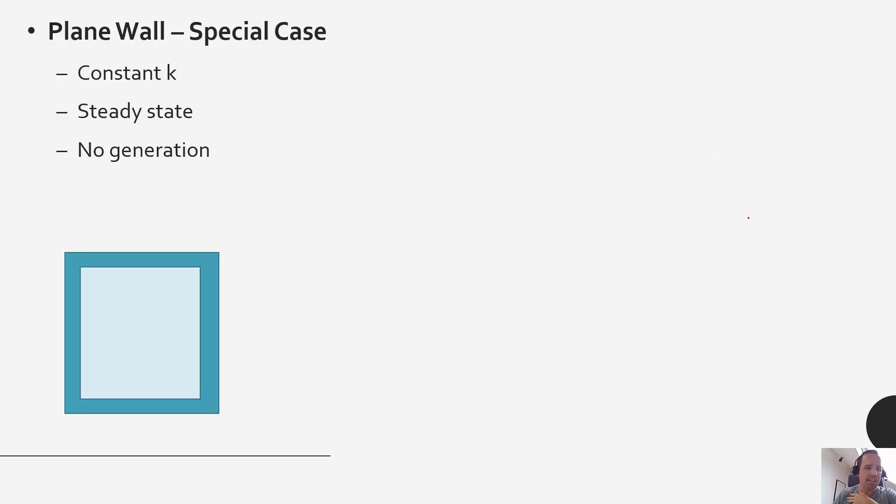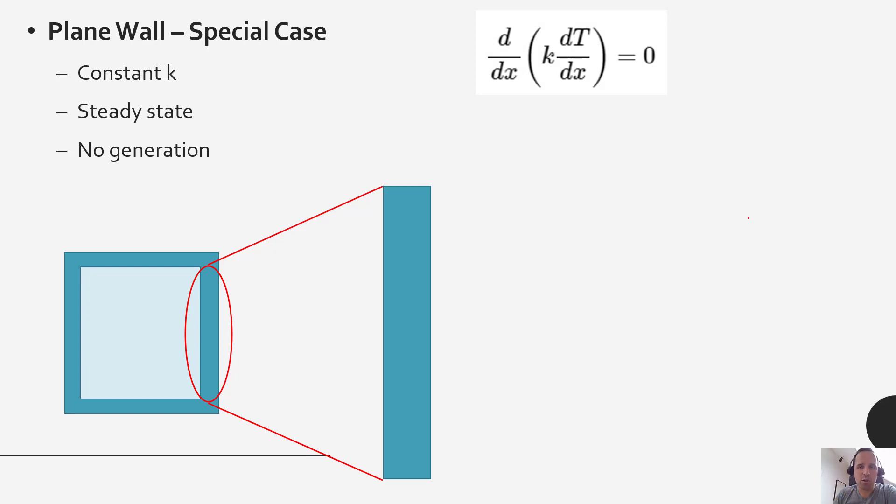So in this special case of the plane wall, again we're going to be considering just one wall at a time, but we could take up the added effect of all of those walls if we're analyzing something like a furnace or a building. So in this special case when we have constant thermal conductivity, steady state, and no generation, this is the form of the heat equation.